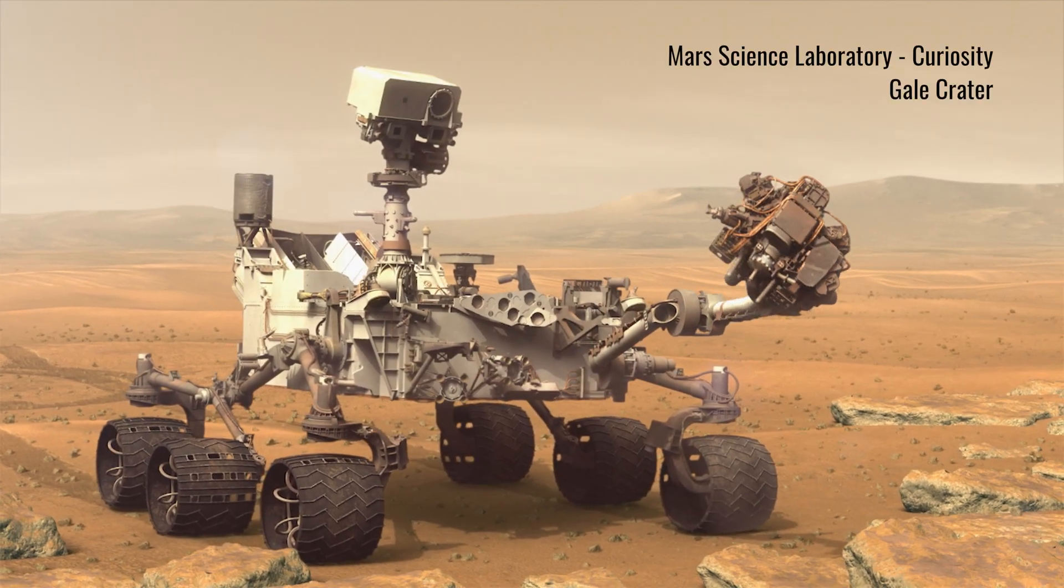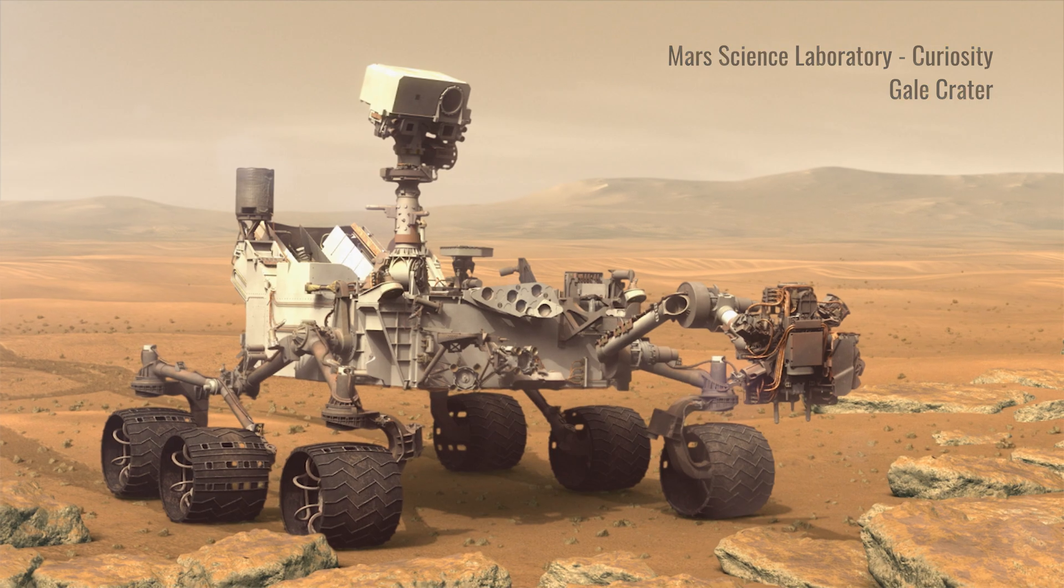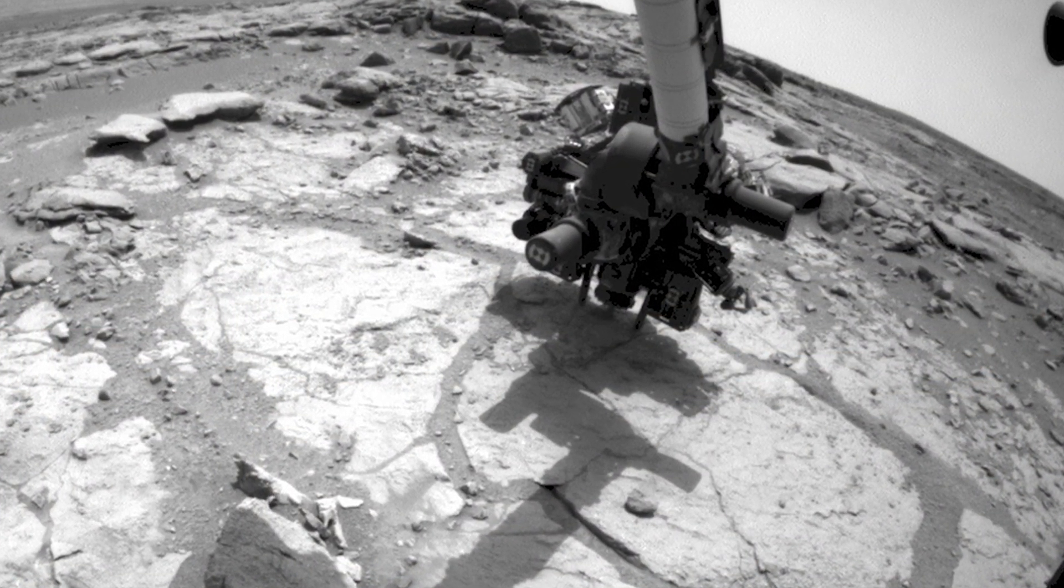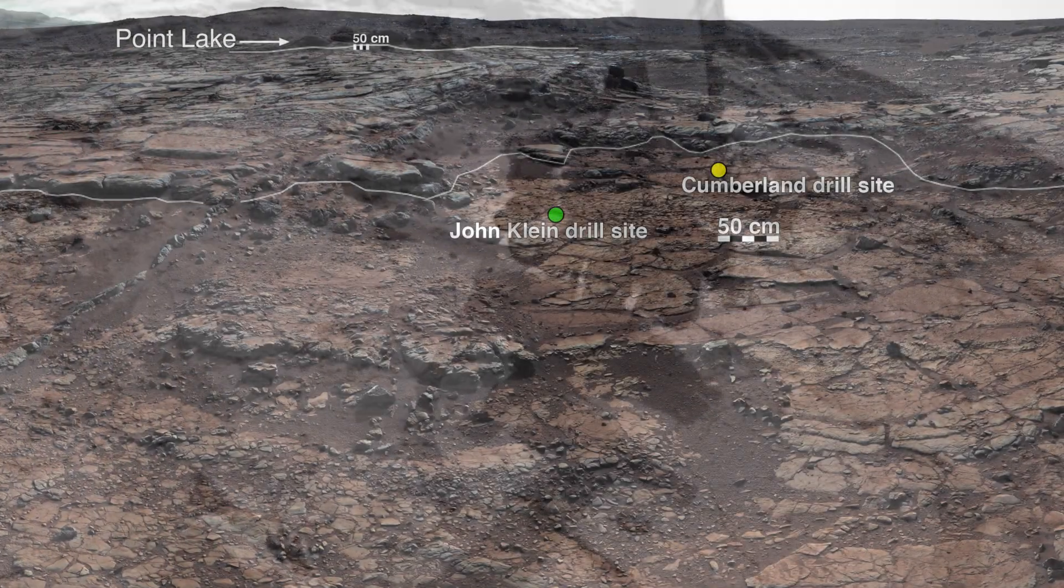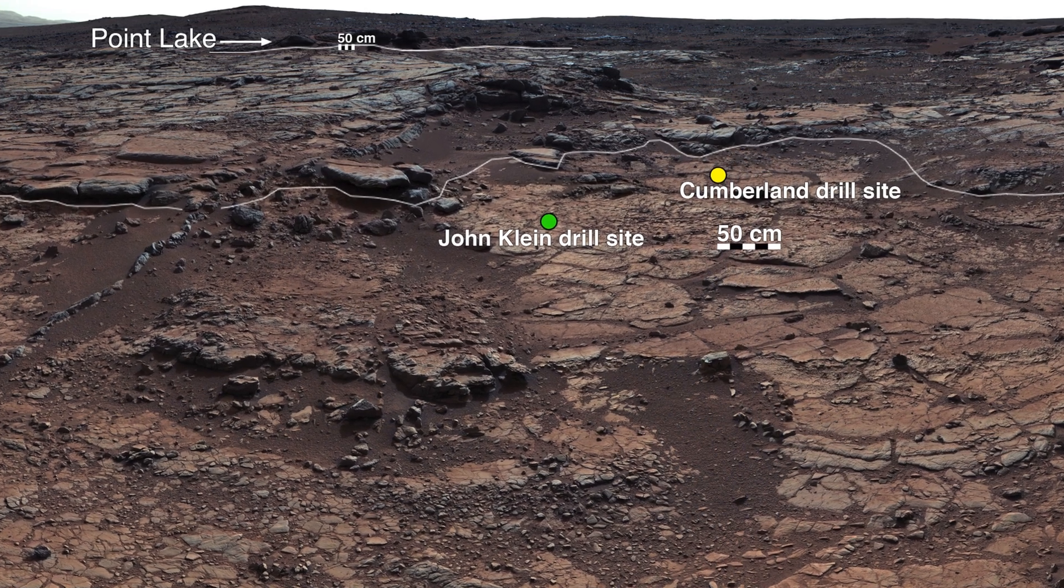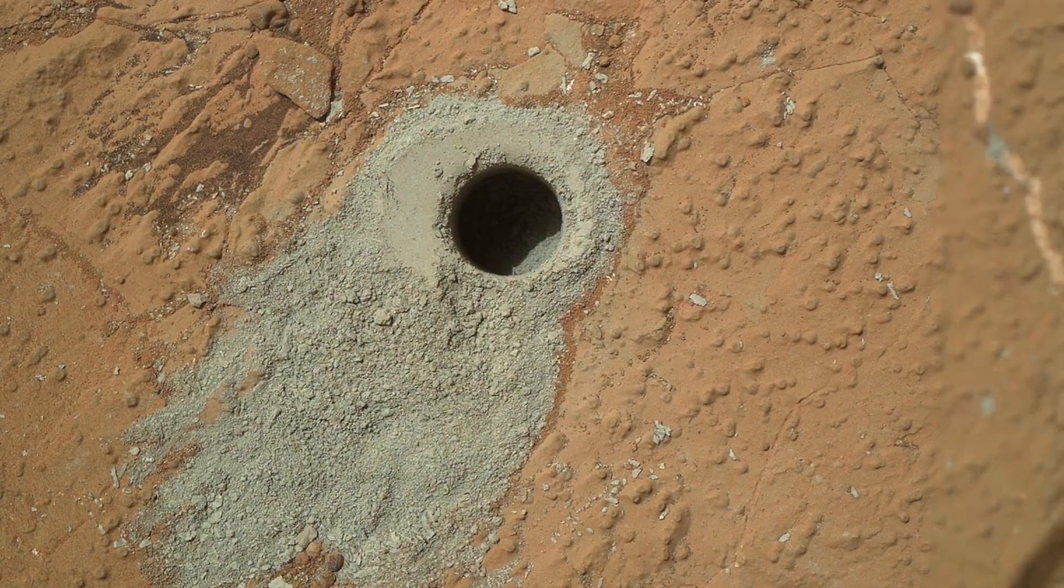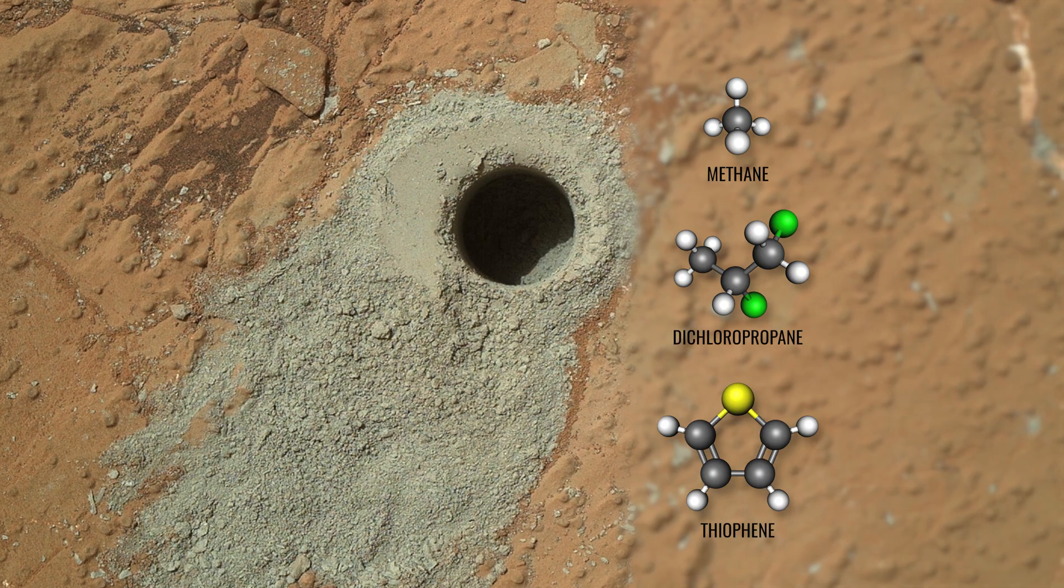A new finding by NASA's Curiosity rover has scientists speculating. In 2013, Curiosity collected samples from a mudstone called Cumberland, leading to the discovery of small organic molecules like methane, chlorinated hydrocarbons, and thiophene.